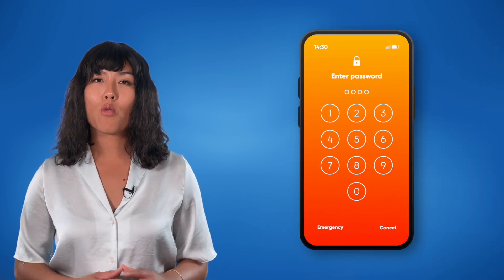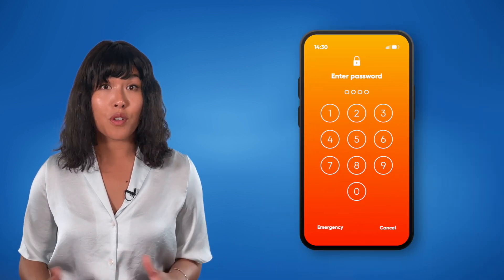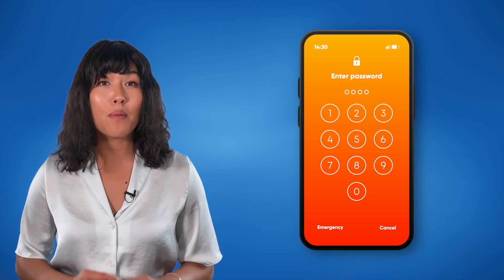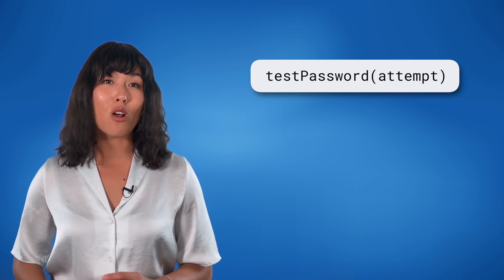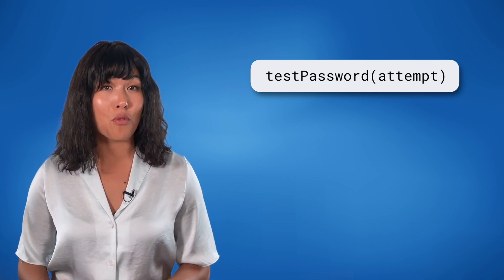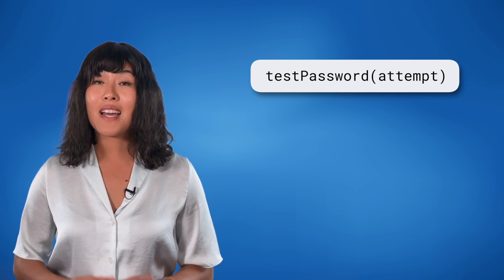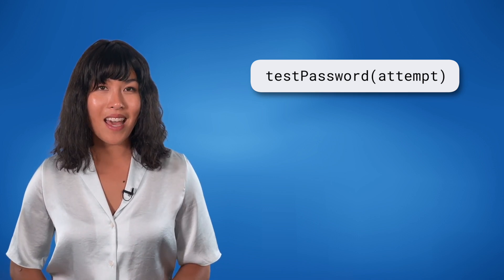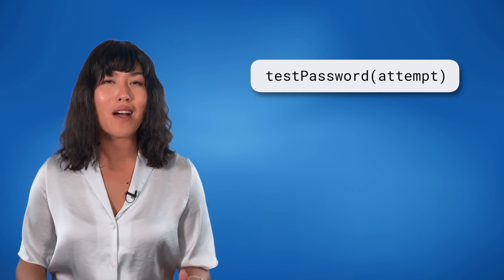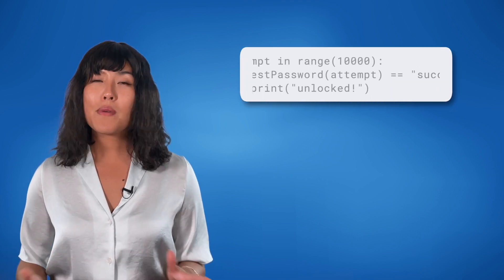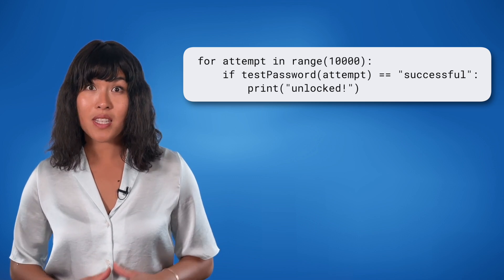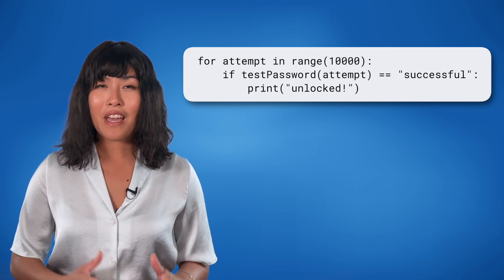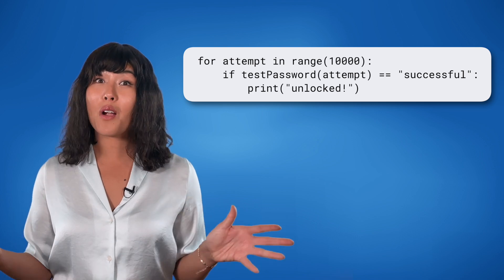Imagine you have a four-digit lock on your phone and you forgot the combination. Let's write a program to help us solve the combination. We will be using a function named testPassword that accepts our password attempt as a parameter. It will return successful if we got it correct and unsuccessful if we got it incorrect. We begin with a for loop, looking through the range of numbers from 0000 to 9999. If our attempt matches the combination, we unlock our phone.